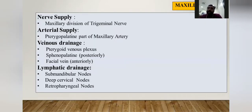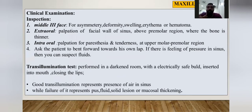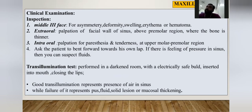Regarding nerve and blood supply: the maxillary sinus is supplied by the maxillary division of the trigeminal nerve. Arterial supply comes from the maxillary artery. Venous drainage is via the pterygoid venous plexus and facial veins. Lymphatic drainage is to the submandibular nodes and deep cervical nodes.